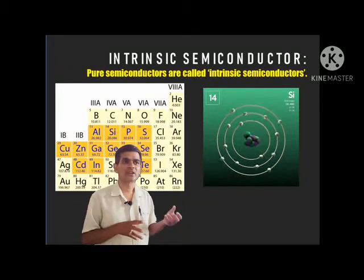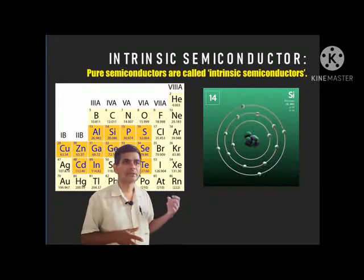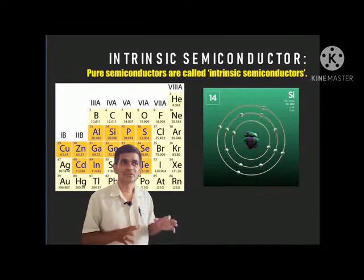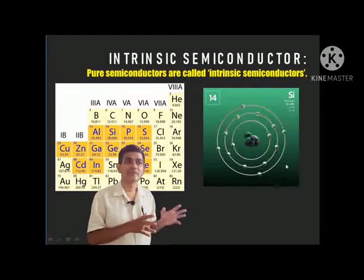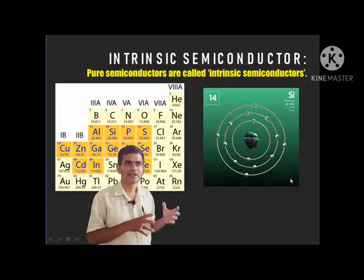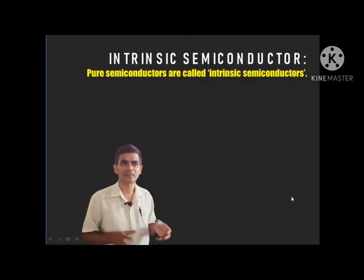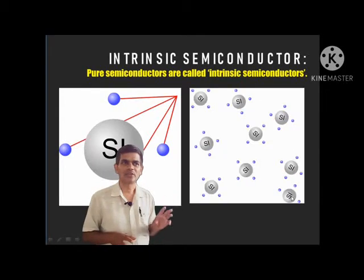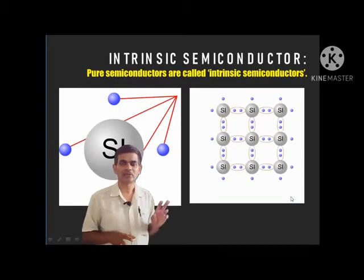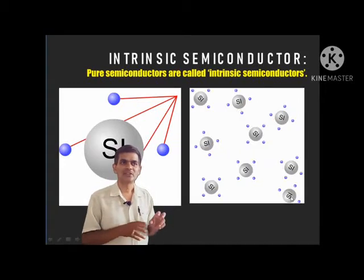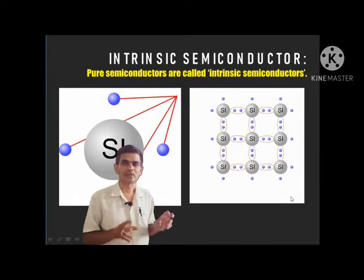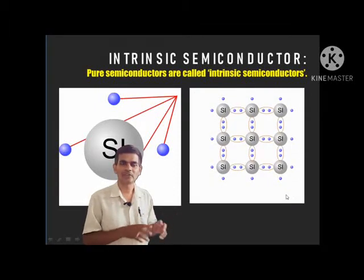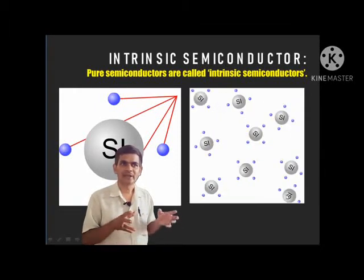This group of elements is classified as a semiconductor in the periodic table. In a pure semiconductor, for example silicon, it has four valence electrons — we call it a tetravalent atom. These four valence electrons are shared with neighboring silicon atoms and form four covalent bonds. You can observe they form four covalent bonds with neighboring atoms and are tightly packed.